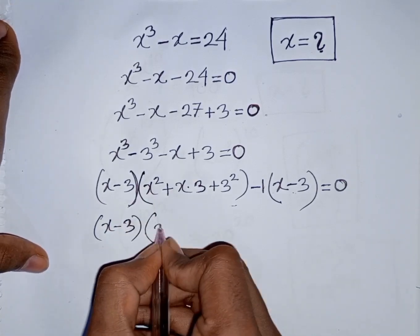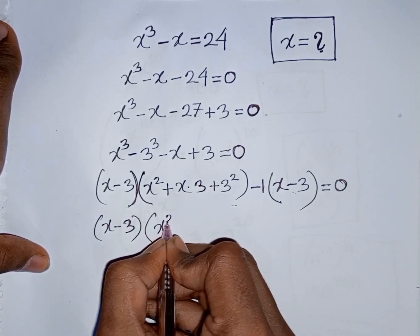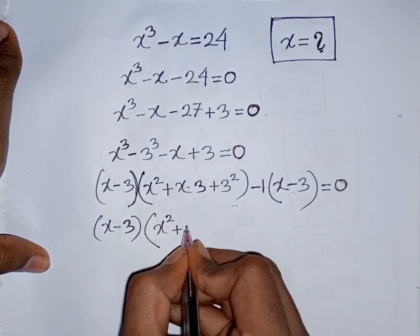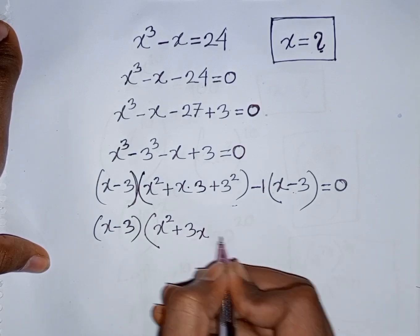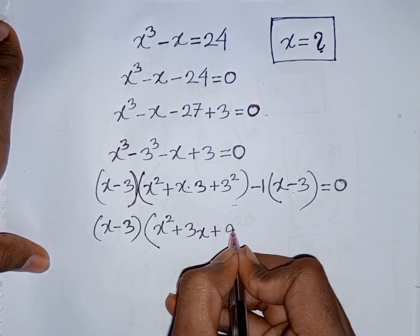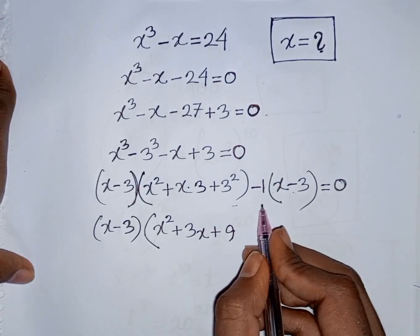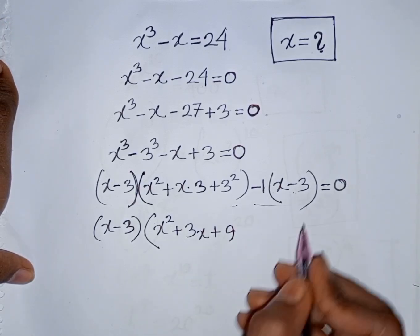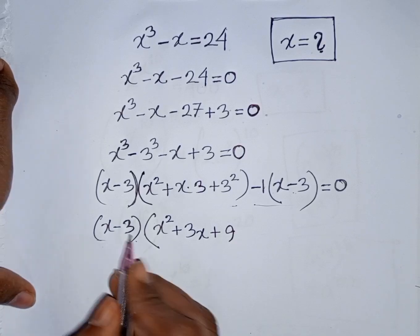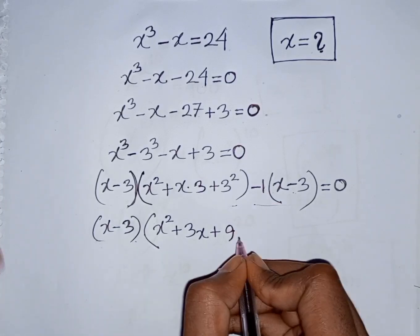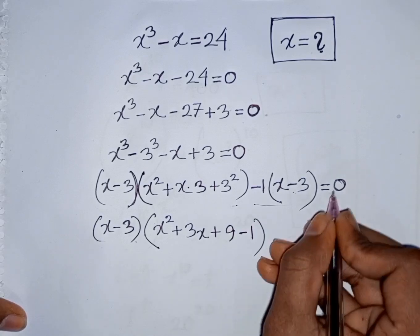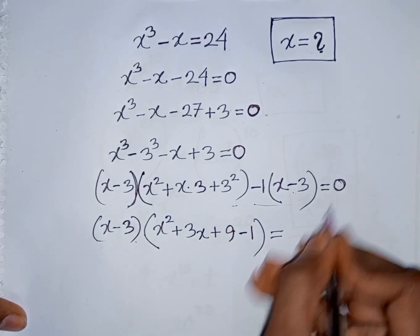So we have x² plus x times 3, that means 3x, then plus 3² which is plus 9. Then this divided by this, so x minus 3 will be cancelled. Here minus 1, bracket close, equal to 0.